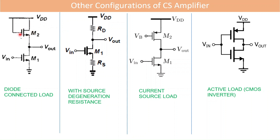Other configurations of the common source amplifier include: first, a diode-connected load where an NMOS has its gate and drain connected together; second, source degeneration where a source resistance is added; third, a current source load using a PMOS biased by DC voltage VB; and fourth, the active load also known as the CMOS inverter. In the current source load, M2 is connected to VB which is a DC bias voltage, whereas in the active load the PMOS is connected to the AC signal — this is an important difference.